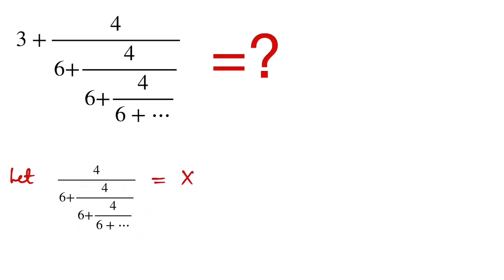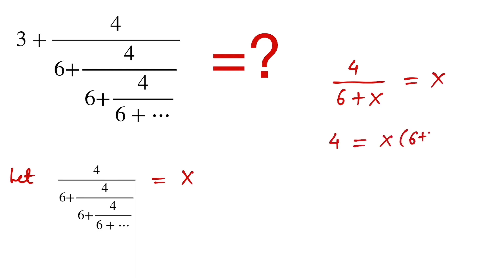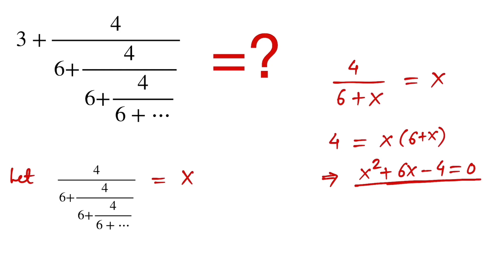Because the pattern repeats infinitely, we can substitute x back in, giving us 4 divided by (6 plus x) equals x. This gives us x times (6 plus x) equals 4, and therefore we have the quadratic equation x² + 6x − 4 = 0.